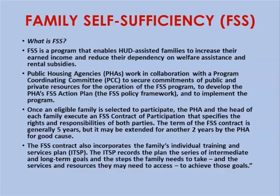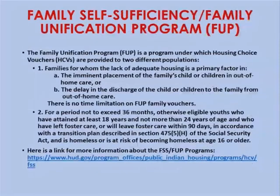Once an eligible family is selected, they execute a contract specifying the rights and responsibilities of both the housing authority and the participating family. The term is usually about five years, extendable for good cause. The Family Self-Sufficiency contract incorporates the family's individual training and services plan, recording intermediate and long-term goals and the steps and resources needed to achieve them. This reflects the precept of engaging customers in developing their service plan — families sit down with the coordinator, define their goals, and sign off on them. When someone has input on what they'll do, they're far more likely to follow through.